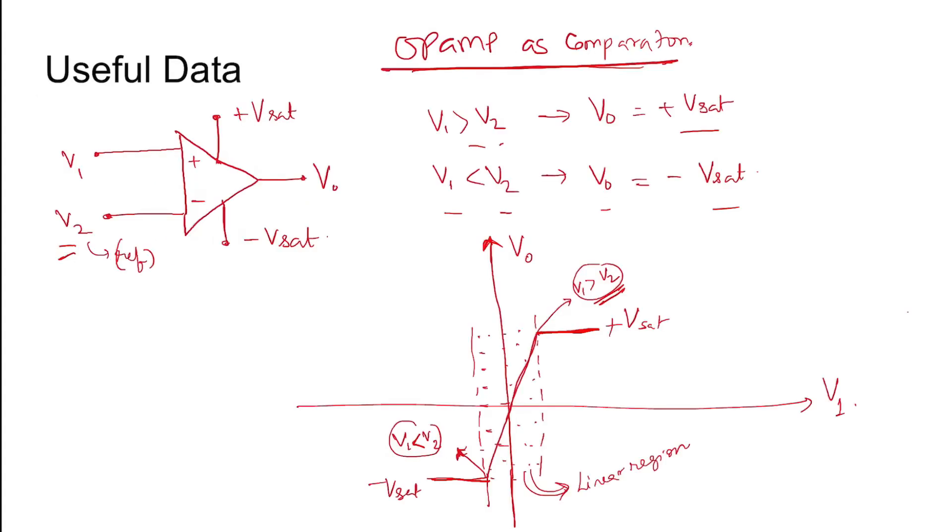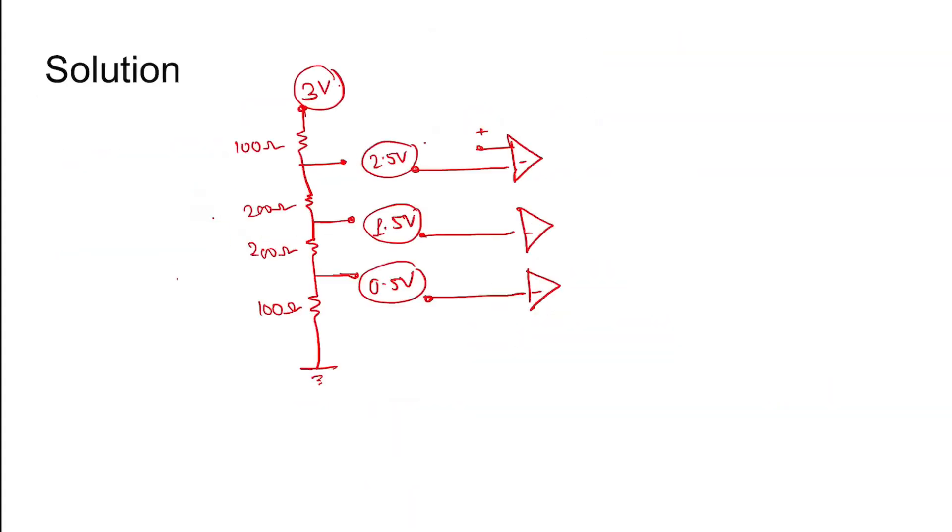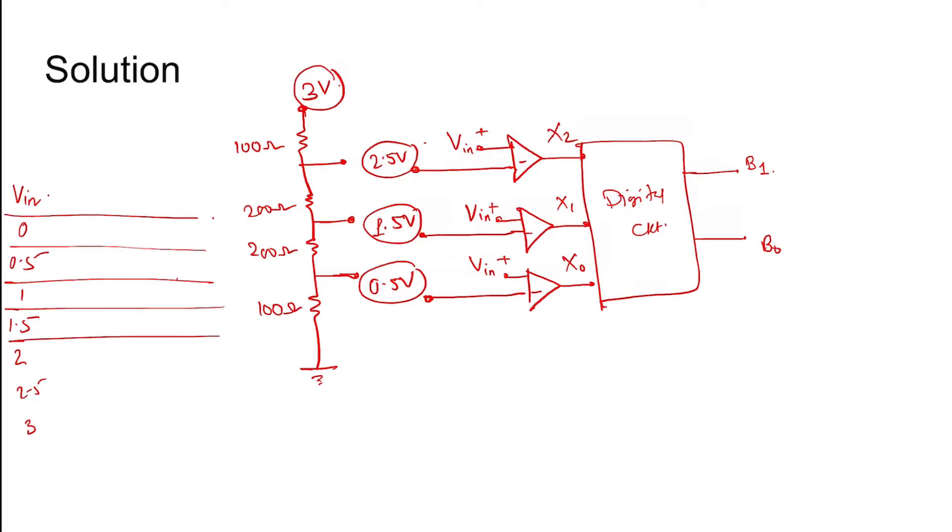The comparators have their inverting terminals taking these reference inputs, and the non-inverting terminals are all connected to Vin. For Vin values of 0, 0.5, 1, 1.5, 2, 2.5, and 3, let us determine the x0, x1, and x2 bits.